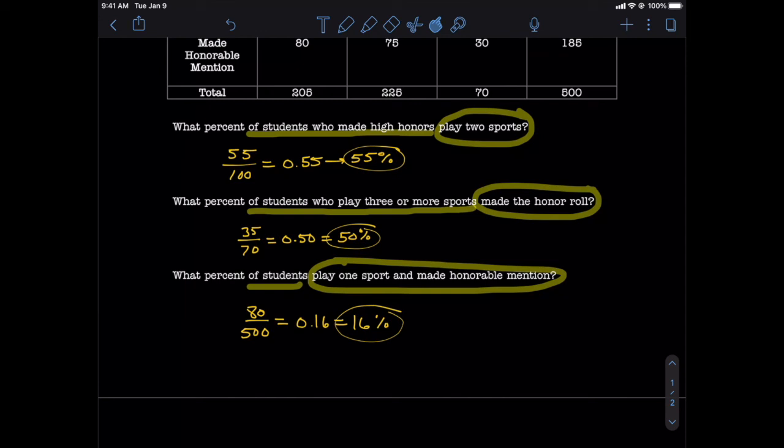Anyway, in these types of problems where you're given a contingency table, you need to look for the intersection of the two categories listed in the question. And then whichever category follows 'percent of' is going to tell you which total you need to use, unless of course the category is not specified or you don't have the phrase 'percent of,' in which case you would use the grand total.